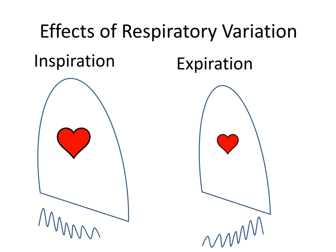So when during the respiratory cycle is the best time to measure the right heart pressures in a spontaneously breathing individual? We use the end expiratory pressures. There are two main reasons. First, end expiratory waveforms are used because the intrathoracic end expiratory pressures most closely resemble atmospheric pressure. Second, the expiratory phase is longer compared to the inspiratory phase, allowing more time to identify the best waveform.